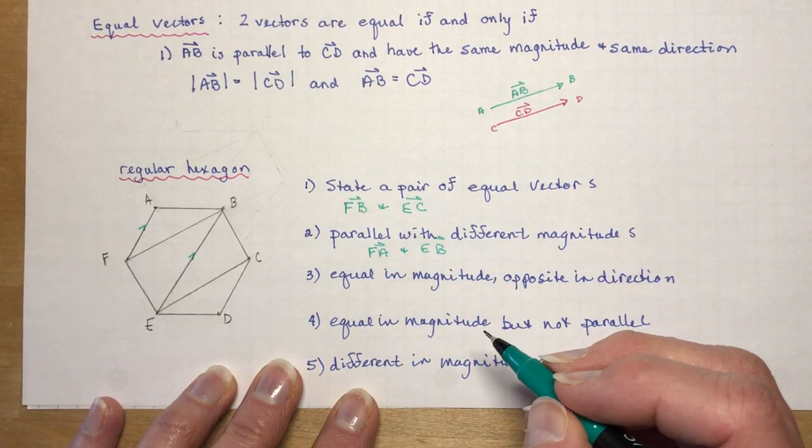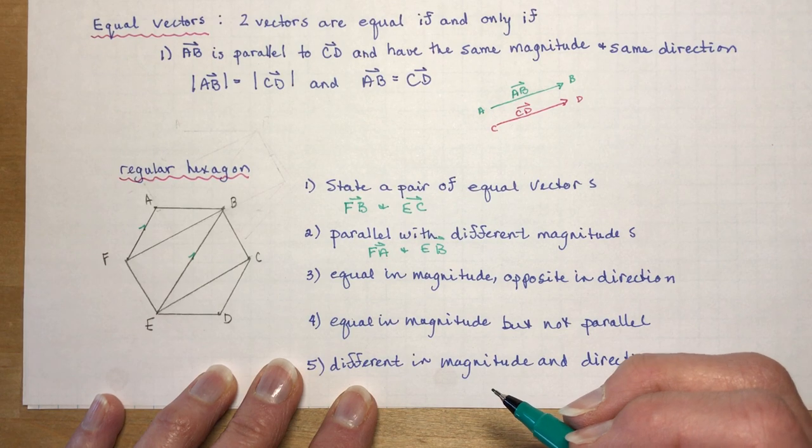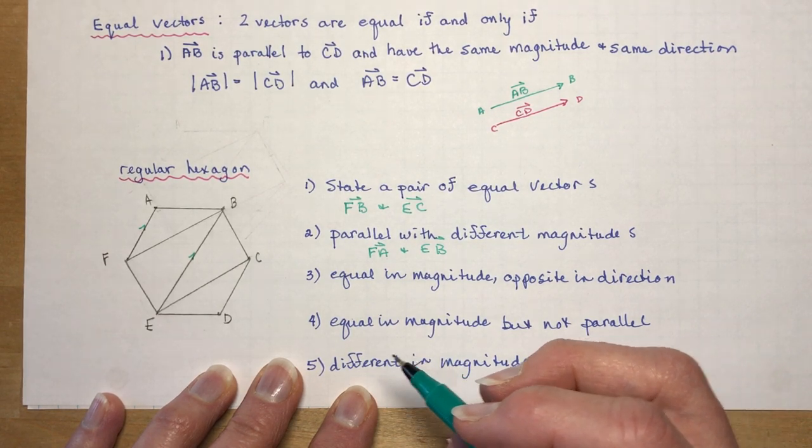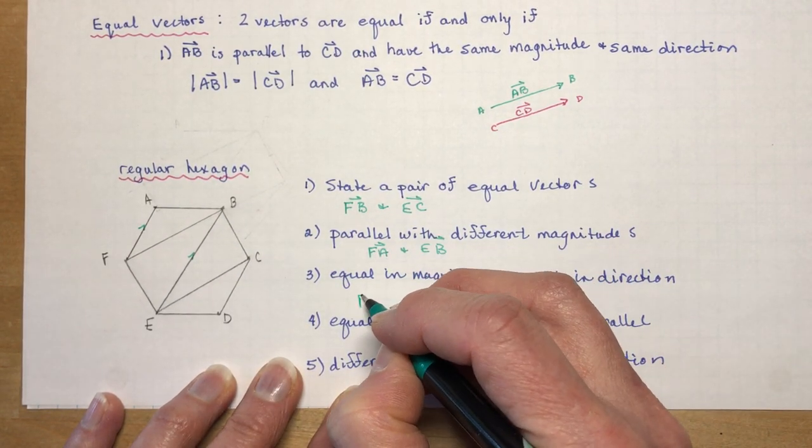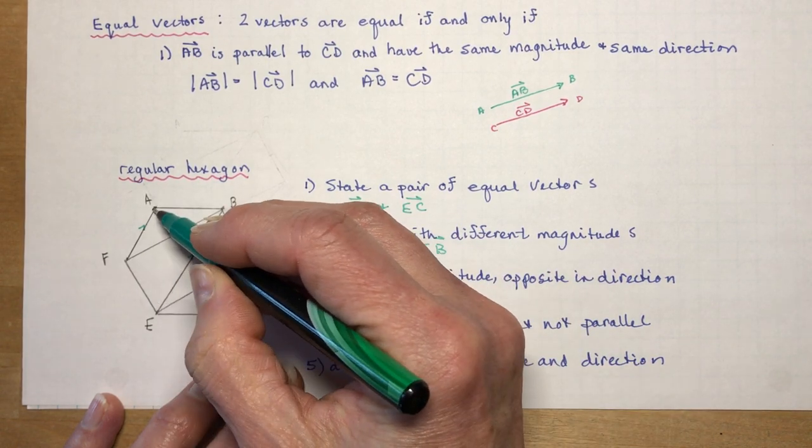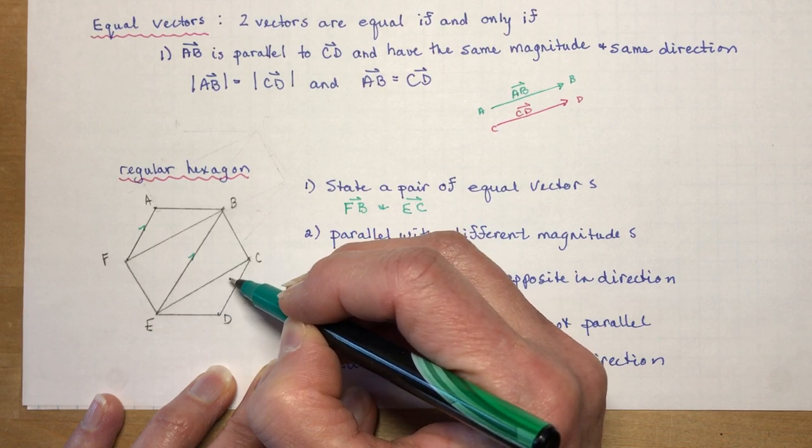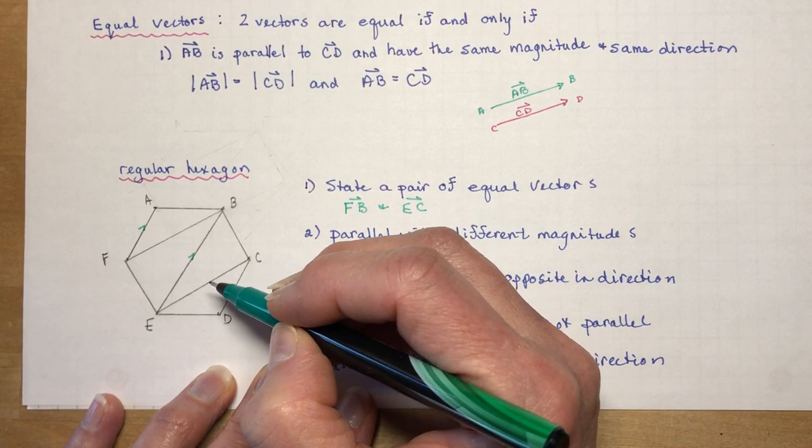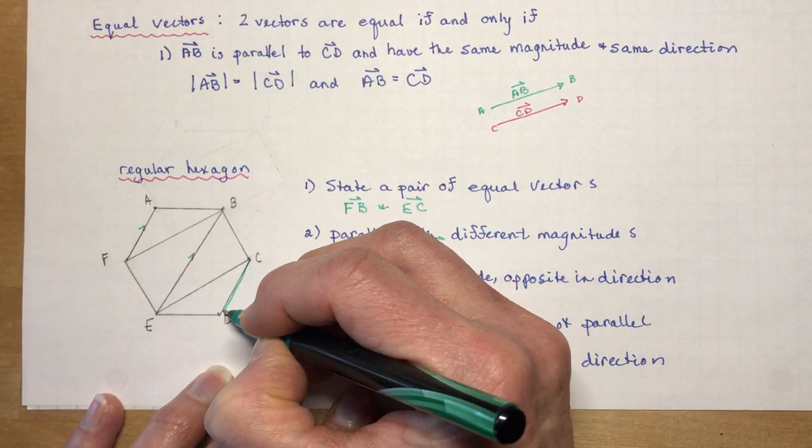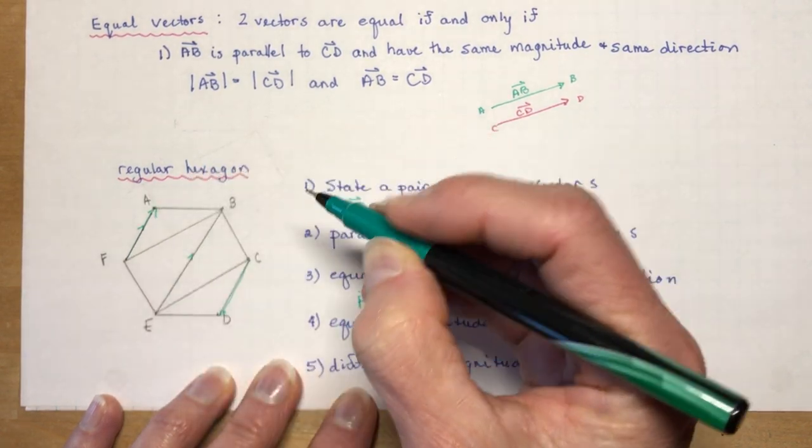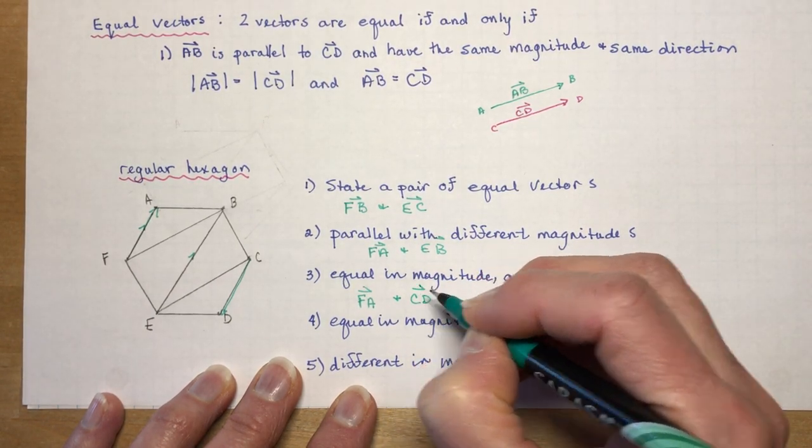Give two that are equal in magnitude but opposite in direction. So there's lots you could say here again. But let's say what if I did FA. What would be equal in magnitude but opposite in direction. These would be the same direction, but if I say it the other way around, if I said FA and CD, so if I went like this one and this one, they're equal in magnitude but opposite in direction. So you just have to state them in a different order.